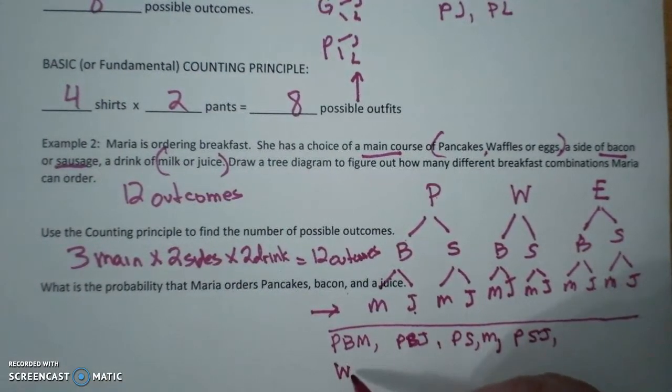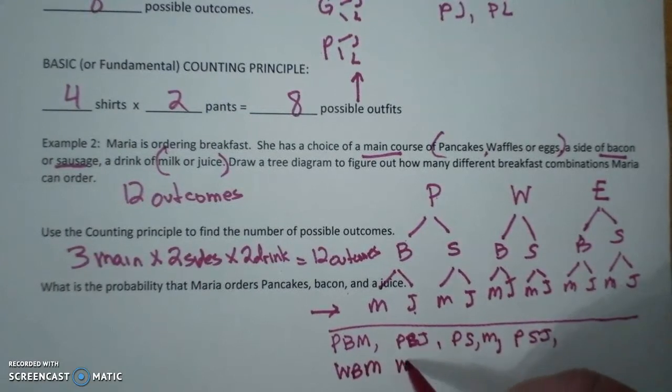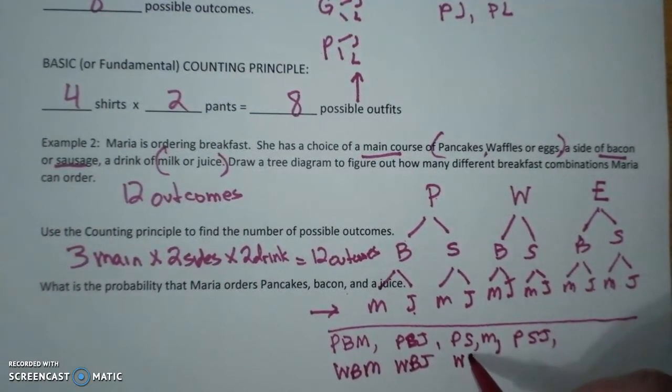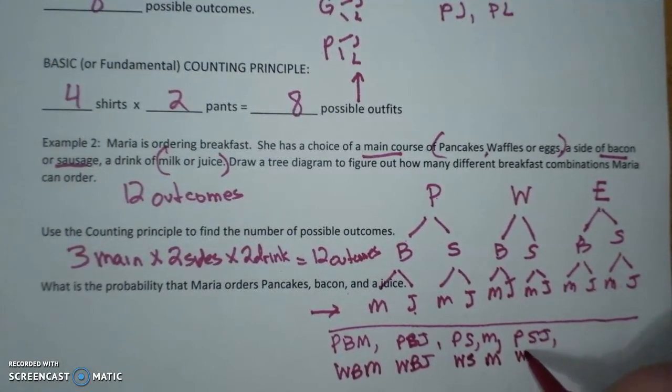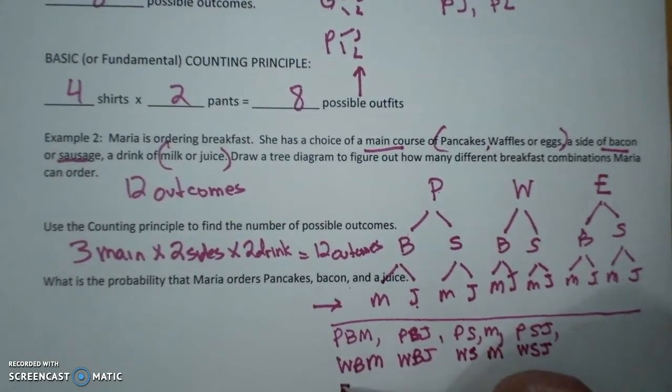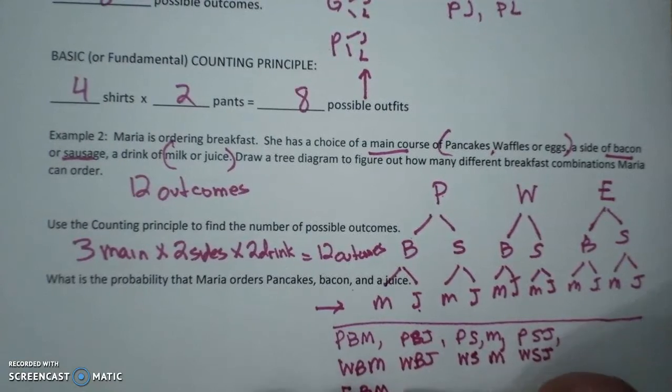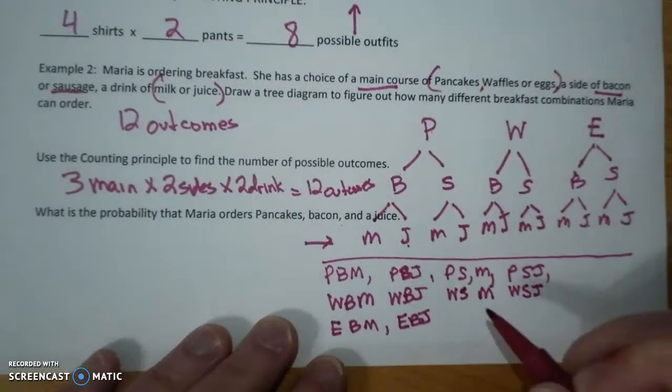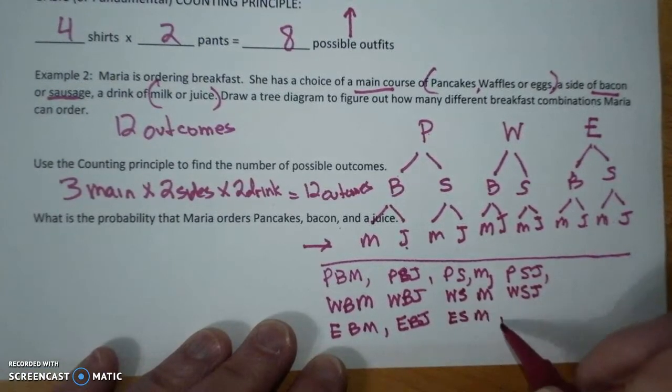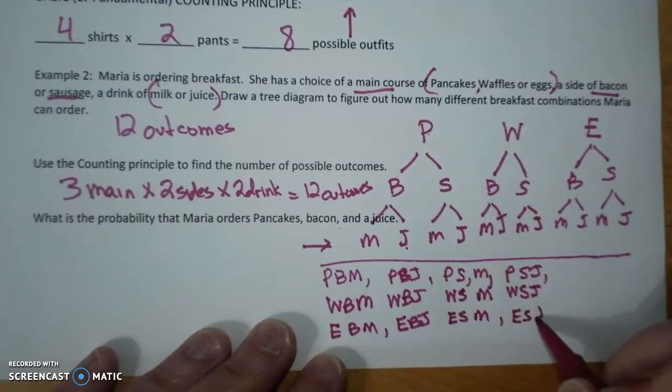Waffles, bacon, and milk. Waffles, bacon, and juice. Waffles, sausage, and milk. Waffles, sausage, and juice. Eggs, bacon, and milk. Eggs, bacon, and juice. Eggs, sausage, and milk. Eggs, sausage, and juice. And notice I do it very systematically.